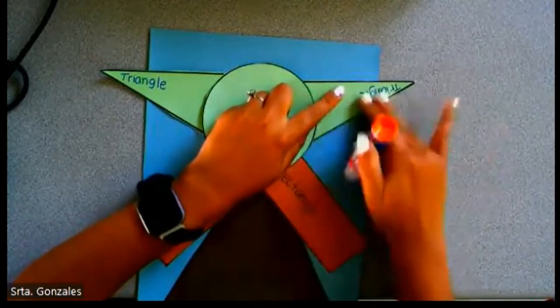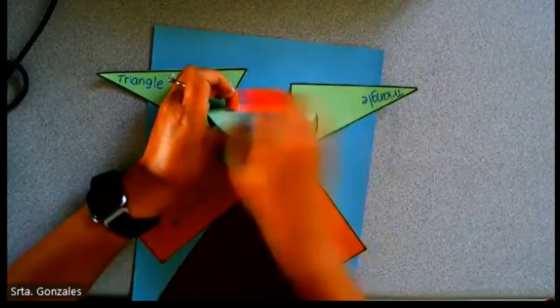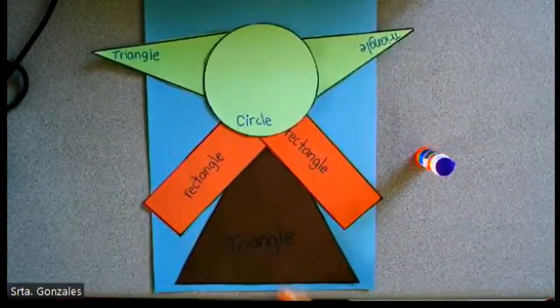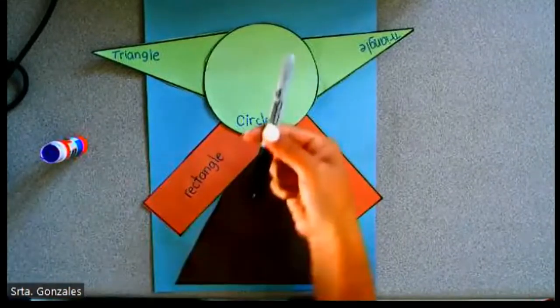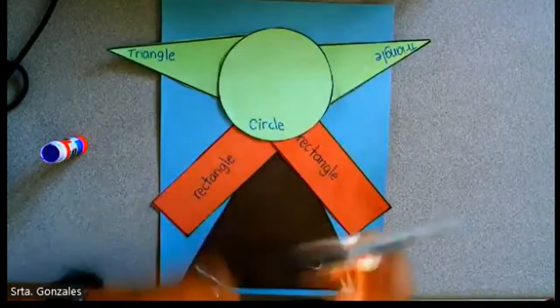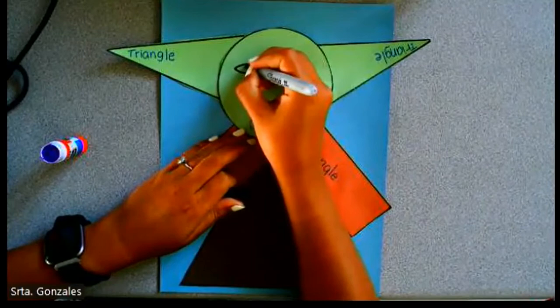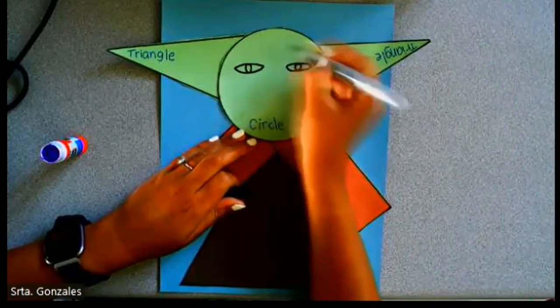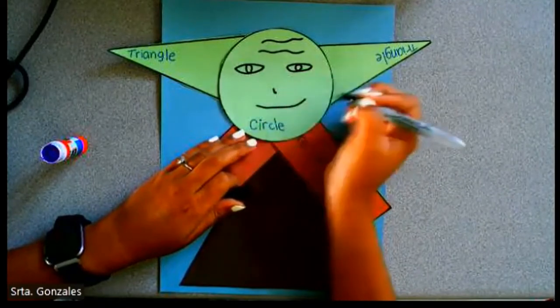Let's put glue on the ears. Now we can glue the rest of the head. Grab a black marker and let's make a face. We need two eyes, wrinkles, a nose, and a mouth.